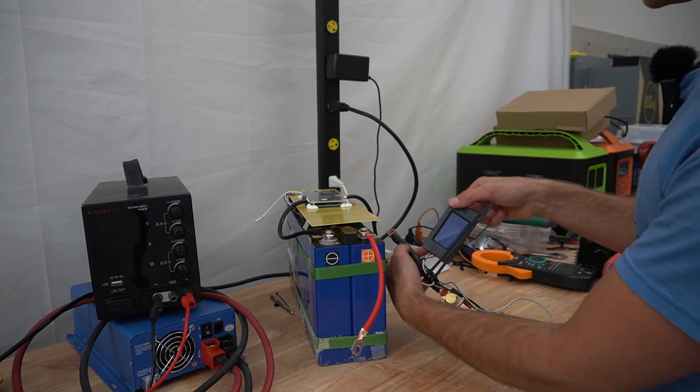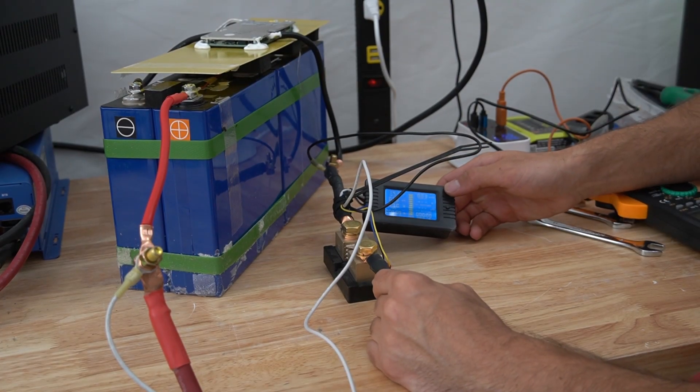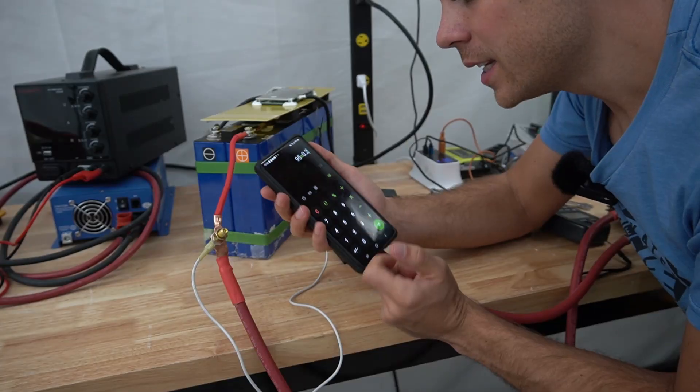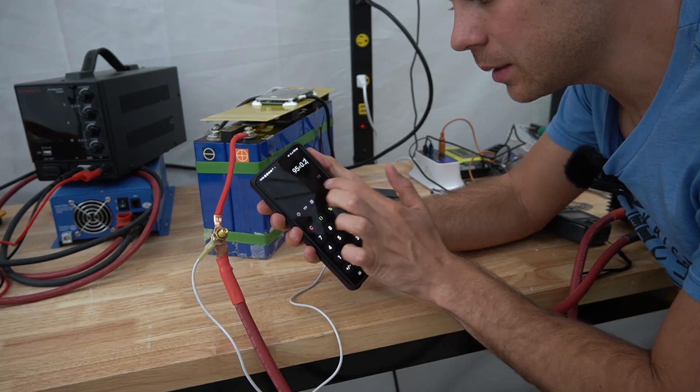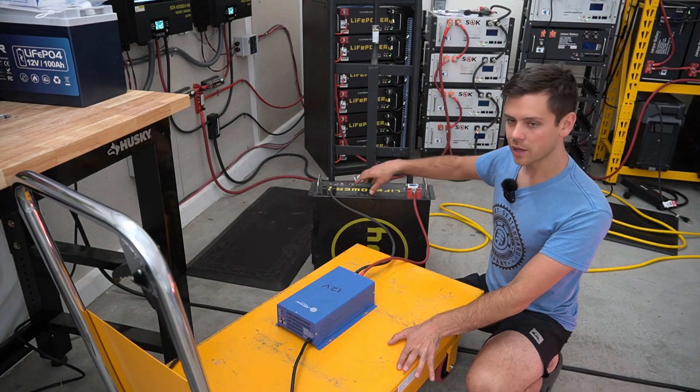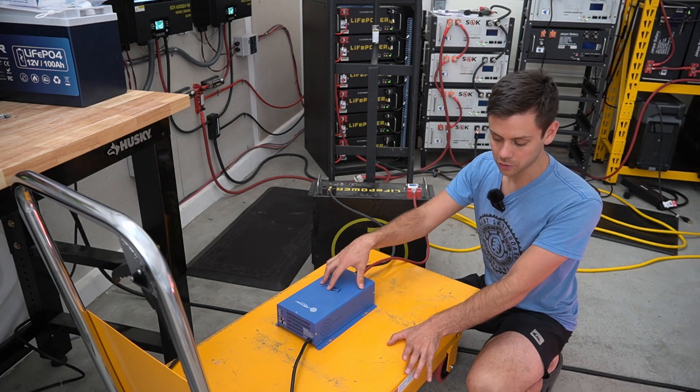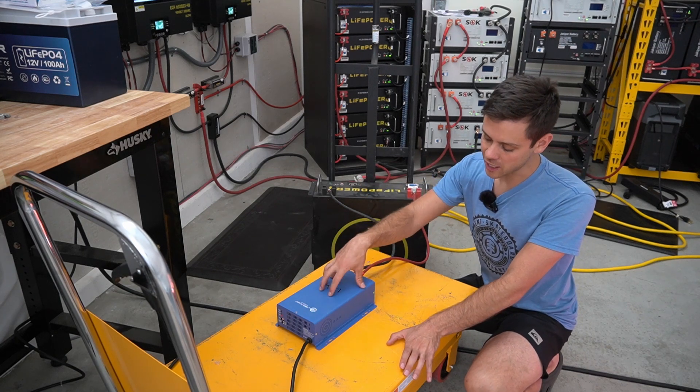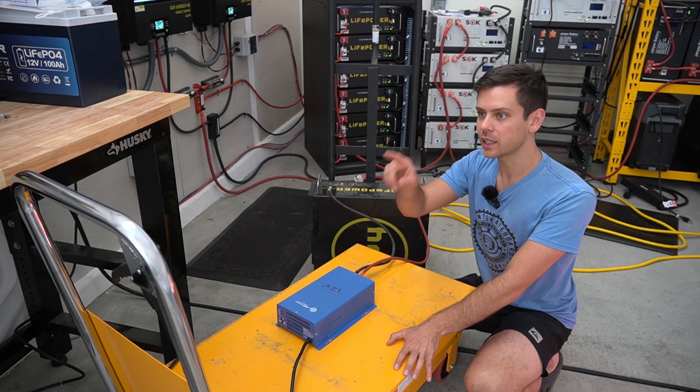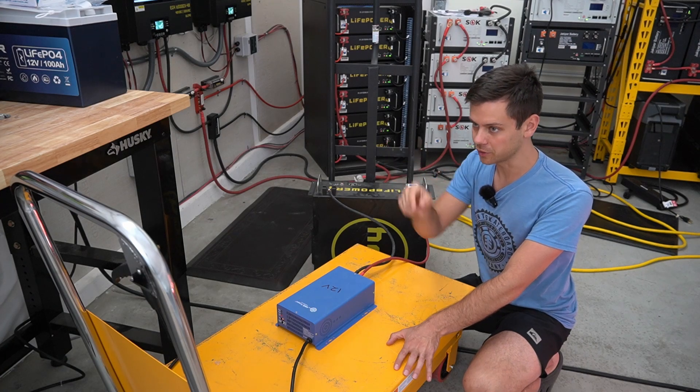We're going to use a shunt for this test. We've used this shunt for a lot of tests now so let's zero it out. Now if we want a 0.2c test we need to pull 19 amps continuously. And over here we have a 24 volt EG4 battery and a 24 volt variable current charger. So we're going to change the current on this charger until we get the perfect amount of current being pulled from that battery.